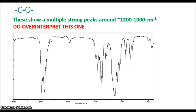Next, we have our carbon oxygen single bonds. These show multiple peaks around 1200 to 1000 cm⁻¹. Usually this one is hard to tell, so I would recommend that you do not over interpret this one. But if you suspect your molecule has a C-O single bond, then expect to see these long broad peaks.